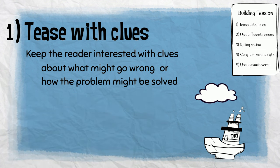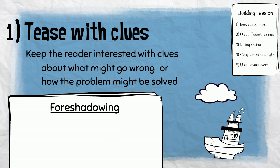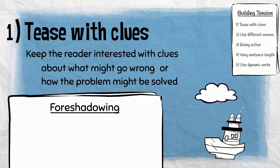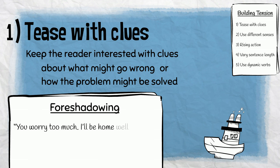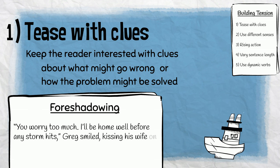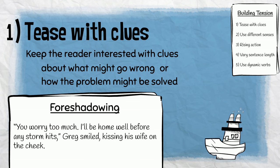We can also tease the reader with a device called foreshadowing, which is where an author gives the reader a hint early on about what might happen later in the story. For example, we could use this sentence at the beginning of our story: "You worry too much. I'll be home well before any storm hits." Greg smiled, kissing his wife on the cheek.